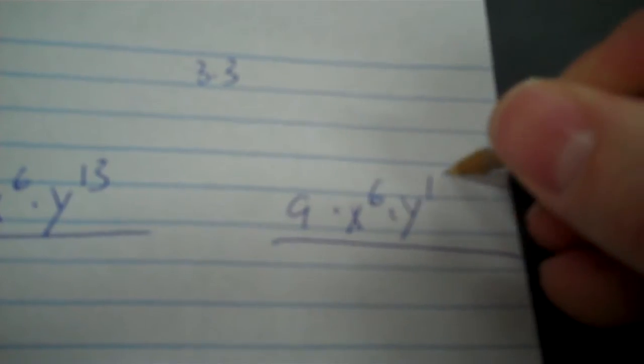They all come straight over, because they're all positive. And then I can simplify the three to the second. Three times itself is nine. So nine times x to the sixth times y to the third.